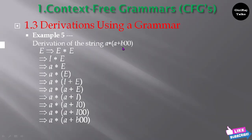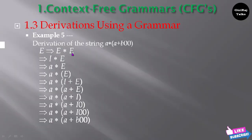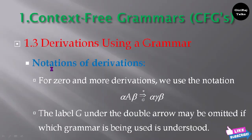The productions already seen are: for E — E → E star E, E → E plus E, E → (E), E → i; for i — i → a, i → b, i → i0, i → i1. Initially in place of E you substitute i, giving E star i. We are deriving from the leftmost ones. In place of i you write a, and in place of E you write E star E.